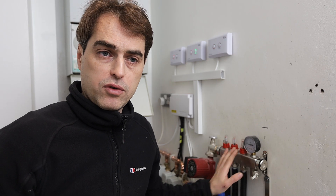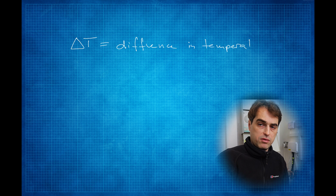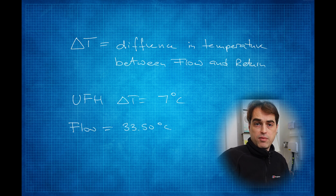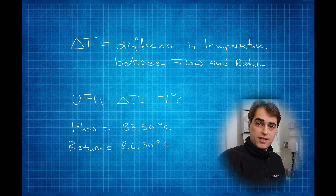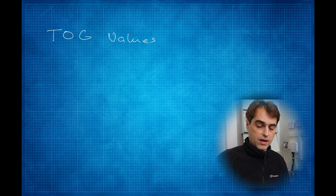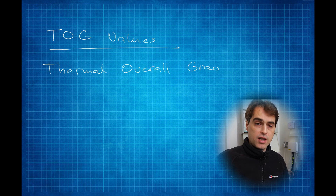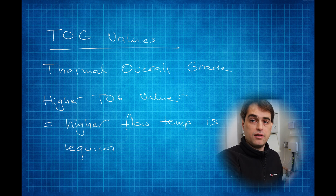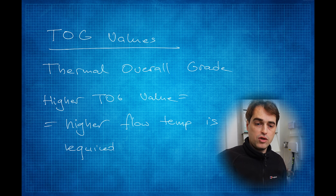If we run the manifold at a delta T — the difference between flow and return — of 7 degrees, then the flow needs to be 33.5 degrees and the return 26.5 degrees. We also have TOG values, which represent the insulating properties of floor coverings. The higher the TOG value, the higher the flow temperature has to be to overcome the resistance of the floor covering, so keep that in mind.